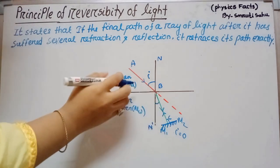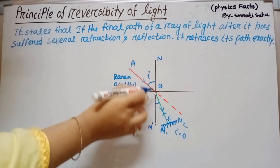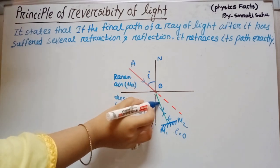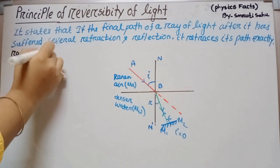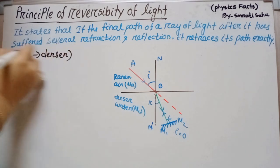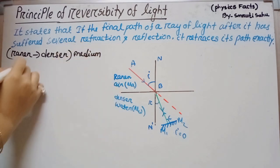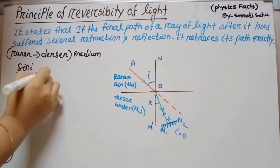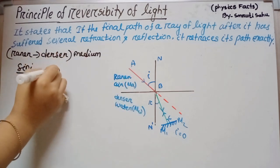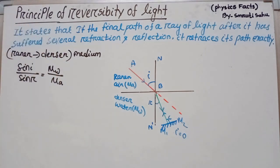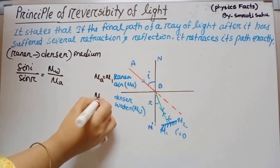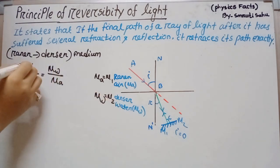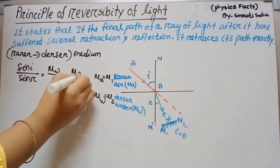For the first case, when the ray passes from rarer medium to denser medium, this angle is the angle of incidence and this angle is the angle of refraction. Using the formula for ray passing from rarer to denser medium: sin I / sin R = μ_W / μ_A. Taking μ_A = μ₁ and μ_W = μ₂ in the general case, sin I / sin R = μ₂ / μ₁.